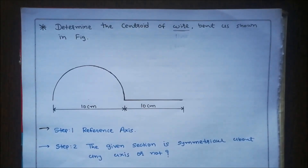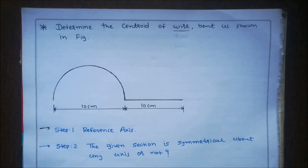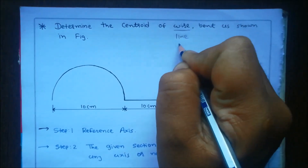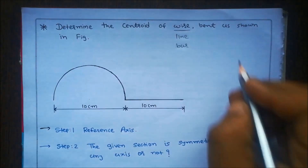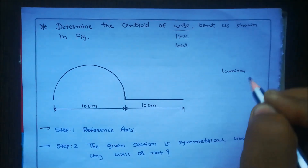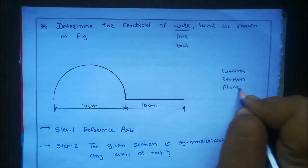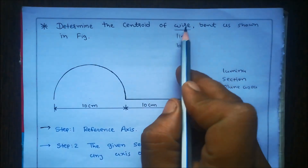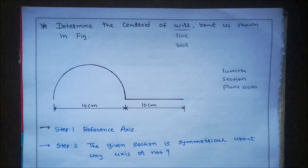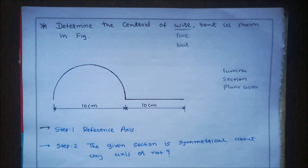Hello friends, today we discuss how to find the center of a wire bent as shown in the figure. Whenever the words wire, line, or bar are used, that is an example of one-dimensional and you use the one-dimensional formula. Wherever the words lamina, section, or plain area are used, that is two-dimensional. Here the word wire is used, so it is one-dimensional, and for finding the centroid of a wire you follow some simple steps.